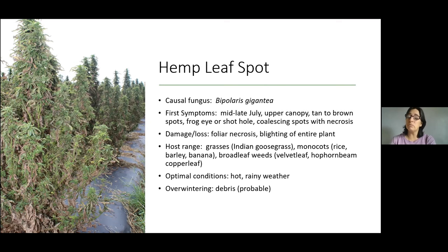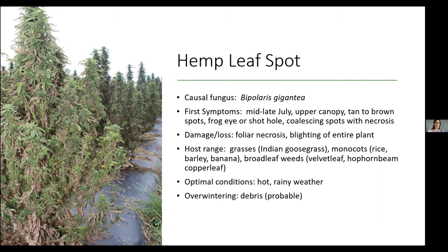Symptoms of bipolaris leaf spot start in the upper canopy as small tan to brown spots that remain small. Sometimes the centers fall out, causing a frog-eye or shot-hole symptom, and those spots will coalesce — meaning necrotic or dead tissue connects the spots — but by looking at the lesion you can still see individual spots. The spot doesn't get very large, but foliar blighting — meaning quick death with brown and crispiness — and blighting of the entire plant is very common.